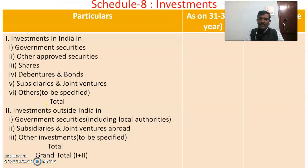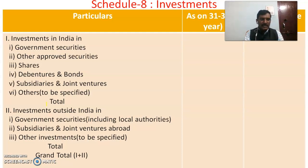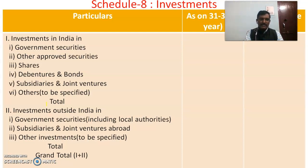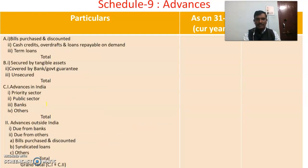Schedule 8 covers Investments, where investments in India and outside India are to be considered. Investments in India include government securities, other approved securities, shares, debentures and bonds, subsidiaries and joint ventures, and others to be specified clearly. Investments outside India include government securities including local authorities, subsidiaries and joint ventures abroad, and other investments to be specified. The grand total is taken to the balance sheet.